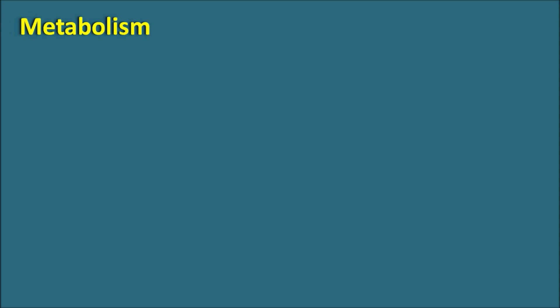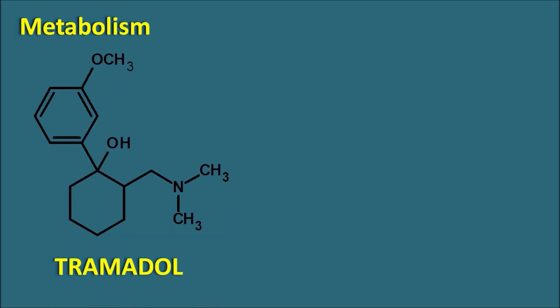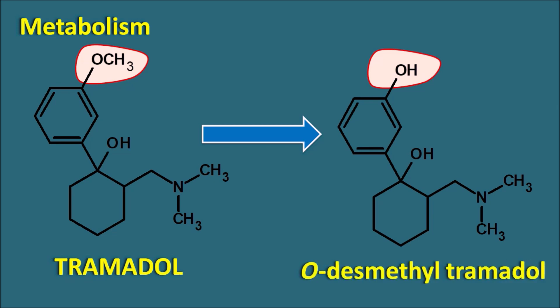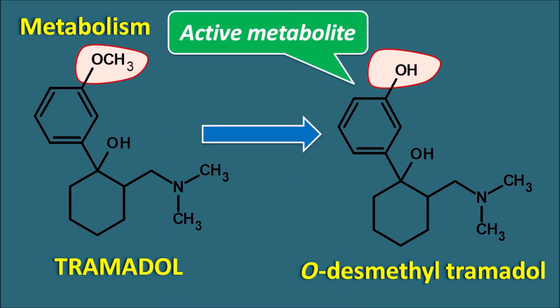Now regarding the metabolism of tramadol: tramadol has methyl groups on both the nitrogen and the oxygen. These methyl groups can be easily removed during metabolism, such that tramadol can give an N-demethyl metabolite or an O-demethyl metabolite. The methoxy group's methyl can be removed to give the O-demethyl tramadol metabolite. This is an active metabolite and highly potent — around six times more potent than tramadol itself. So the pharmacological effects of this drug are due to both the parent drug and its active metabolite O-demethyl tramadol.